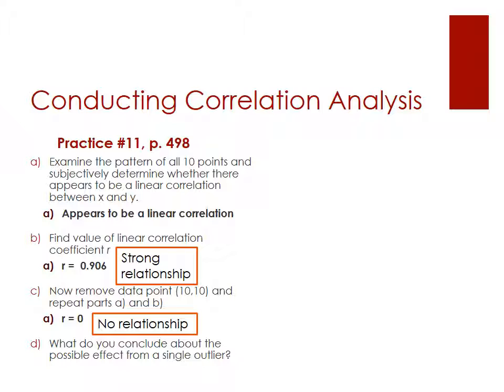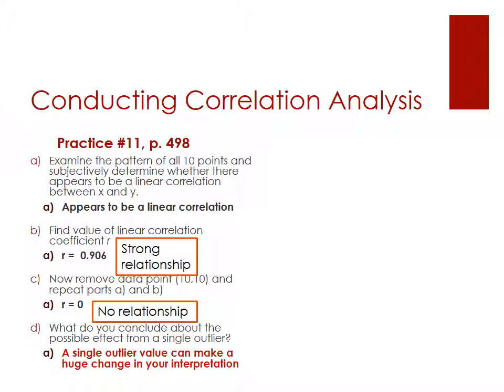So taking all this together, what can you conclude about the possible effect of a single outlier? Well, we can see here that a single outlier value can make a huge change in your interpretation. We went from a strong relationship to no relationship at all. This is why it's very important that you graph your data first and take a look and see if you've got any outliers before you proceed any further. A single outlier can massively change your interpretation. Correlations are very sensitive to the effect of outliers.